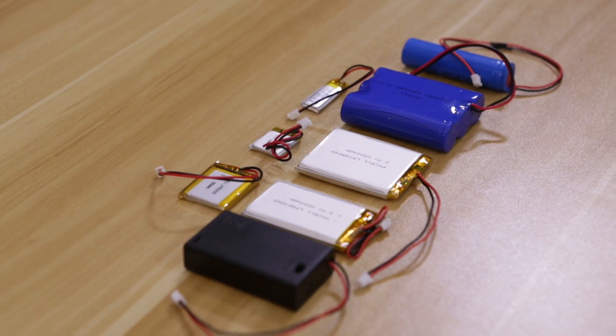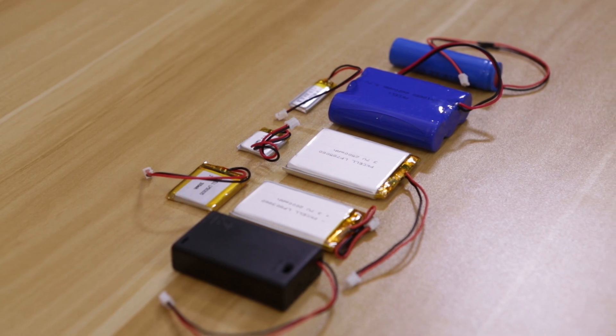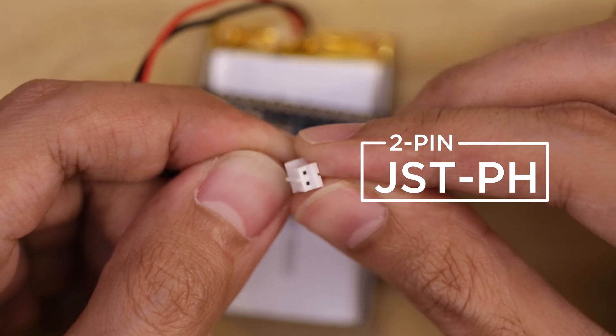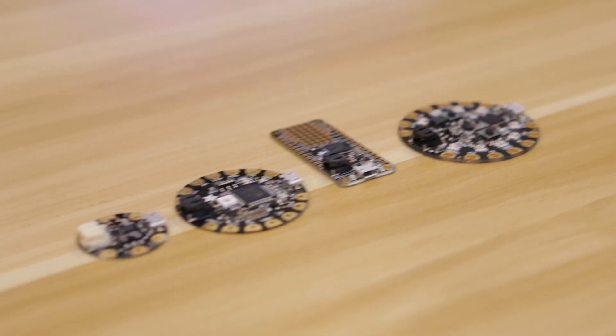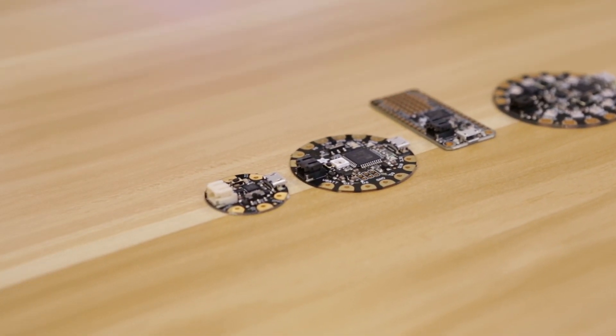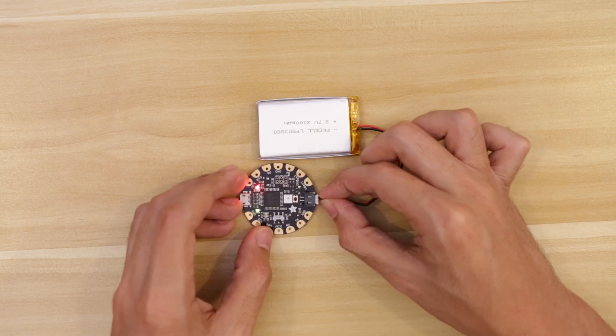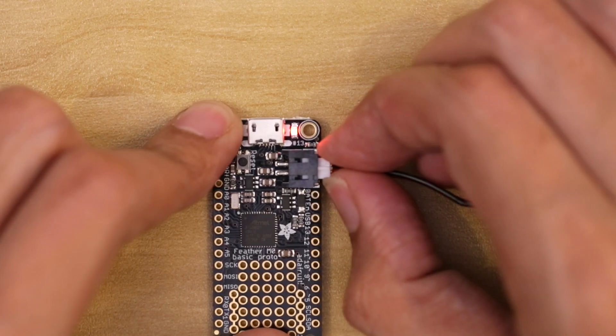To power your portable projects, we do have a lot of different options for batteries. Most of them use a two-pin JST connector. Boards like the Adafruit Circuit Playground, Feather, Flora, and Gemma all have on-board female JST connectors. This way, it's easy to plug in a number of different batteries and it's also easy to disconnect.